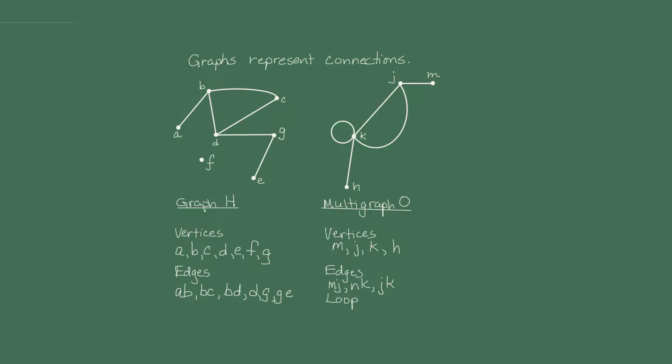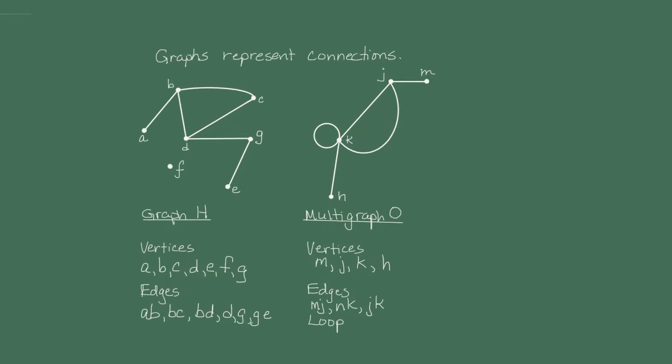So in a multigraph, you'll often see not only the vertices labeled, but possibly the edges labeled.